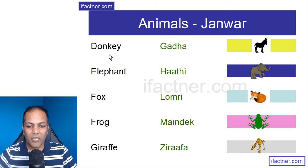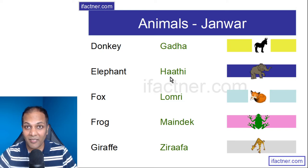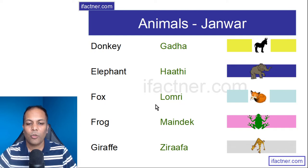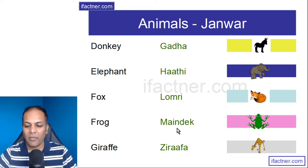Donkey is Gadha. Elephant is Haathi. Fox is Loomdi. Frog is Maandak.